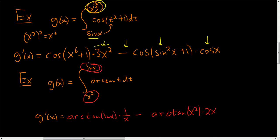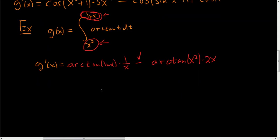So the pattern is: plug in the upper limit, multiply by its derivative, subtract, plug in the lower limit, multiply by its derivative — and you're done. Let's do one more.